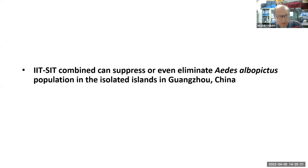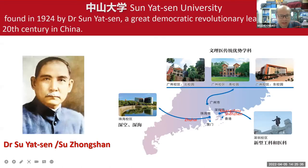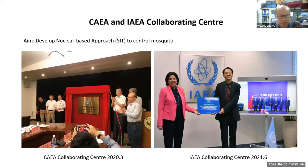This demonstrates that IIT and SIT combined can suppress and essentially eliminate the mosquito population in a target area. Now we want to develop and test this approach in larger areas — how to release and treat females to control Aedes mosquitoes across China. Our university has received support from CAEA and the IAEA, and we have set up a cooperation center.